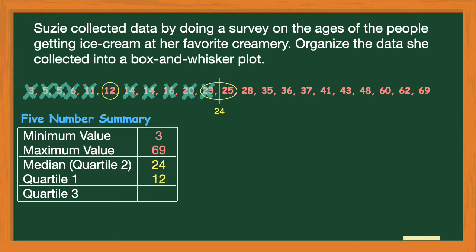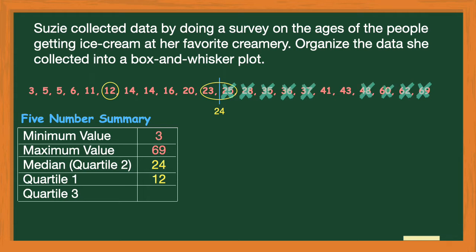Quartile three is also a median, but it's the median of the numbers to the right of 24 — that's called the upper quartile. Using process of elimination, I start by eliminating 25 and then 69, and keep going until I end up with one number in the middle. That number is 41, so 41 is my quartile three — the median of the upper quartile.